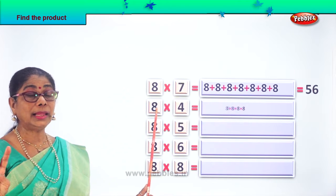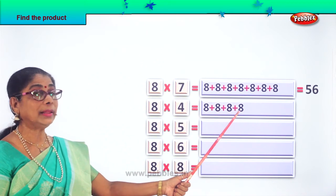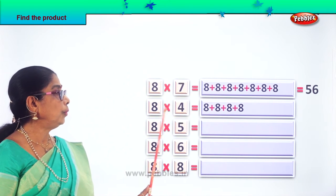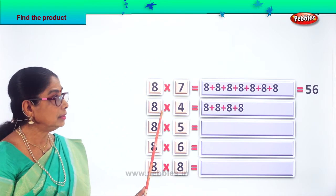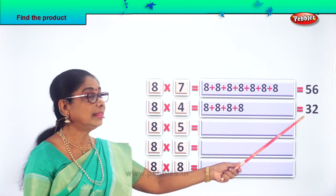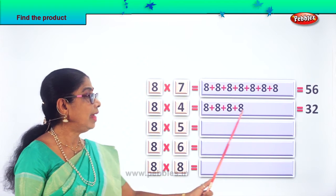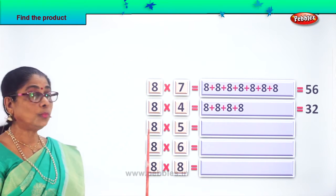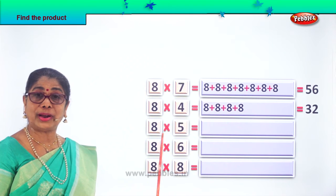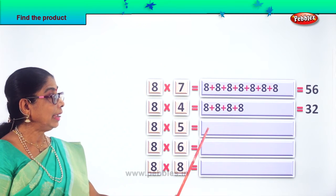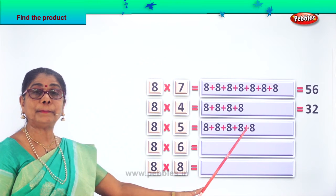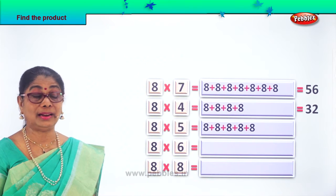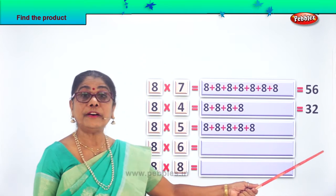8 four times: 8 plus 8 plus 8 plus 8 — that's 4 times. What are 8 fours? 8 into 4. 8 fours are... and then 8 five times: 8 five times, 8 plus 8 plus 8 plus 8 plus 8 — so 5 times 8. What are 8 fives? 8 fives are 40.